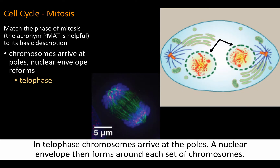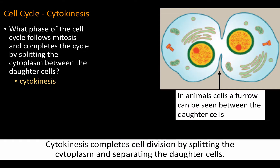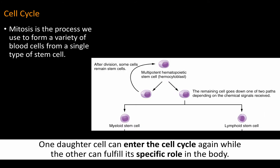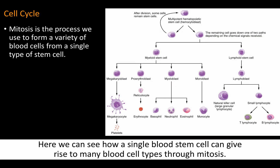In telophase, chromosomes arrive at the poles and a nuclear envelope then forms around each set of chromosomes. Cytokinesis completes cell division by splitting the cytoplasm and separating the daughter cells. One daughter cell can enter the cell cycle again, while the other can fulfill its specific role in the body. Here we can see how a single blood stem cell can give rise to many blood cell types through mitosis.